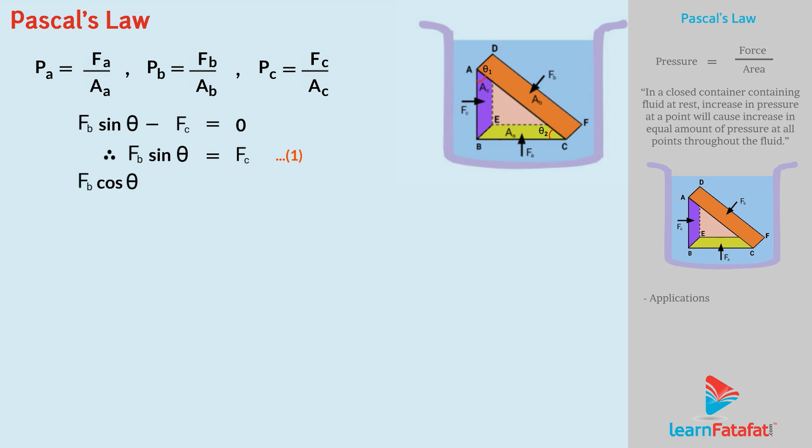Similarly, FB cos theta minus FA is equals to zero. Therefore, FB cos theta equals to FA. Let's call this as equation number 2. Looking at the geometry of the figure, we can say that AB sin theta minus AC equals to zero. Therefore, AB sin theta equals to AC. Let's call this as equation number 3.